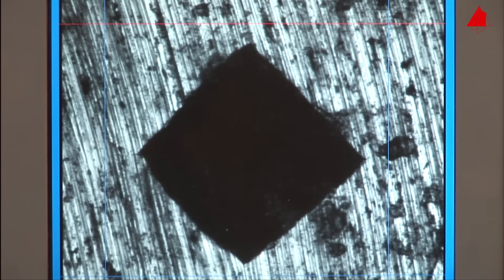This is the magnified indentation on the display screen. With the control knob, the tester now places four measuring lines at the corners of the indentation. Doing that, he can easily measure the length of the two diagonals.